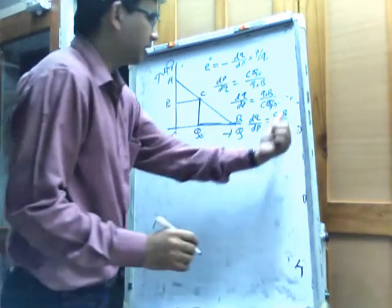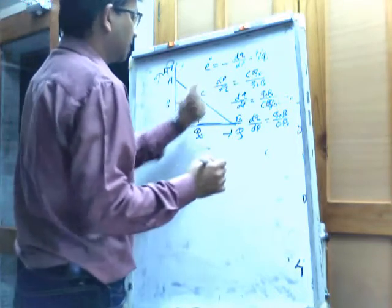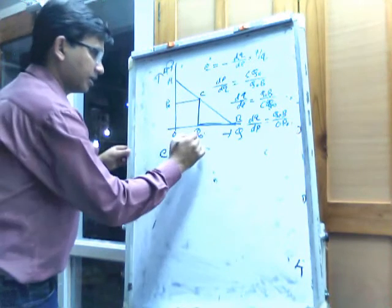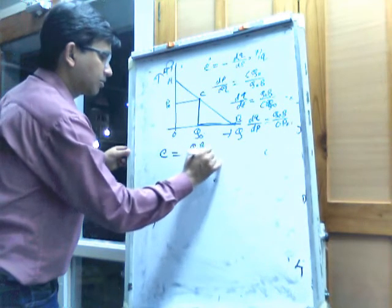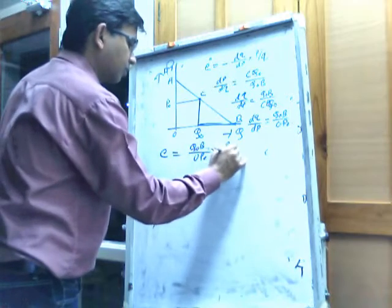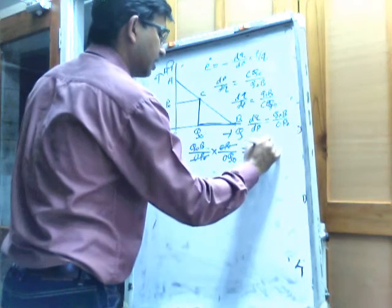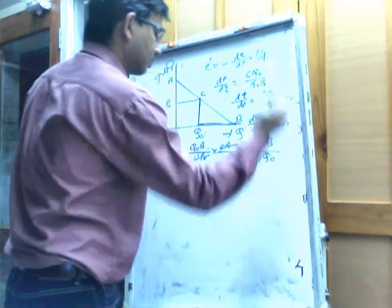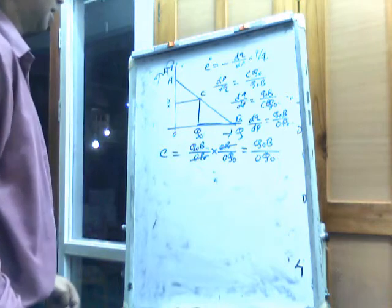We multiply dq by dp with the ratio of price by quantity, p by q. So price elasticity of demand equals Q0B divided by OP0, multiplied by OP0 divided by OQ0. The OP0 terms cancel, giving us Q0B by OQ0. This is the price elasticity of demand.